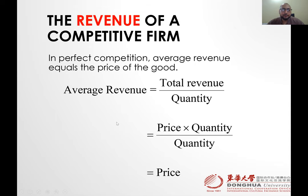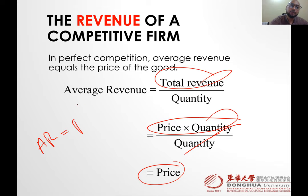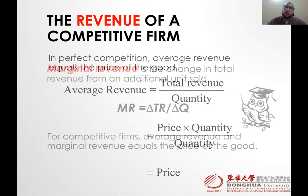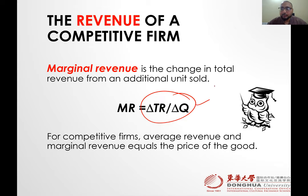The average revenue formula is: AR = total revenue divided by quantity. Since total revenue equals price multiplied by quantity (TR = P × Q), substituting gives us AR = P × Q / Q, and the quantity cancels — so average revenue equals market price. This holds in every market structure. Marginal revenue is the change in total revenue divided by the change in quantity sold.